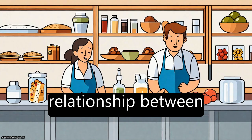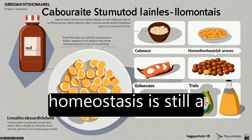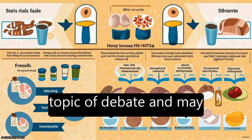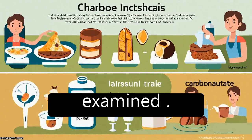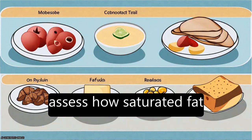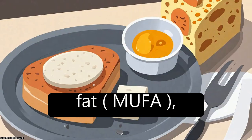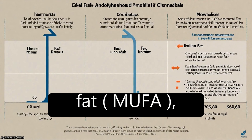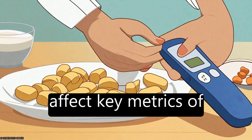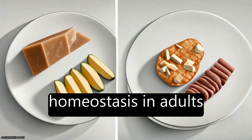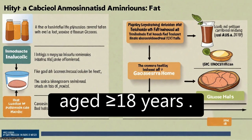Background: The relationship between dietary macronutrients and glucose-insulin homeostasis is still a topic of debate and may vary depending on the clinical measures examined. This study aimed to assess how saturated fat (SFA), monounsaturated fat (MUFA), polyunsaturated fat (PUFA), and carbohydrate affect key metrics of glucose-insulin homeostasis in adults aged 18 years or older.